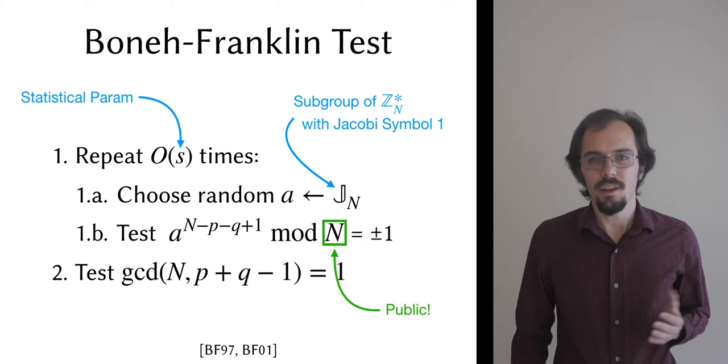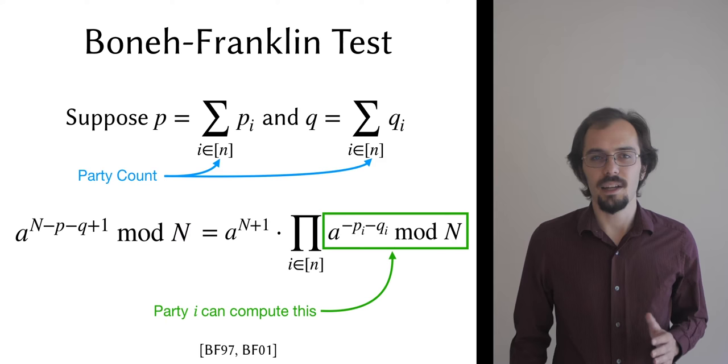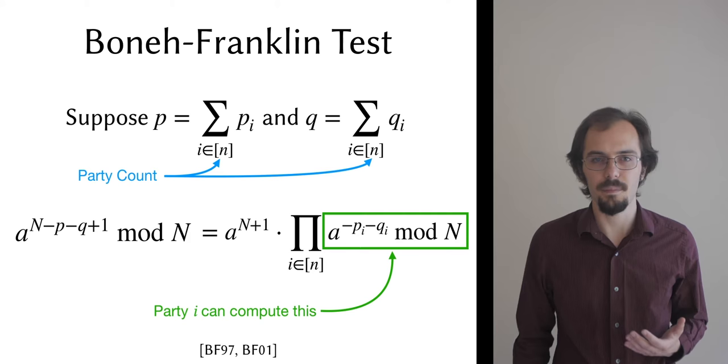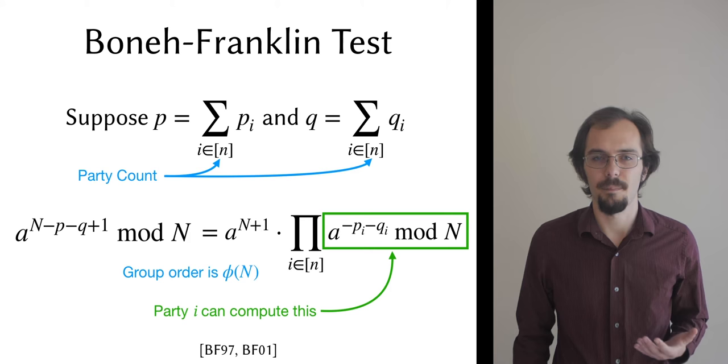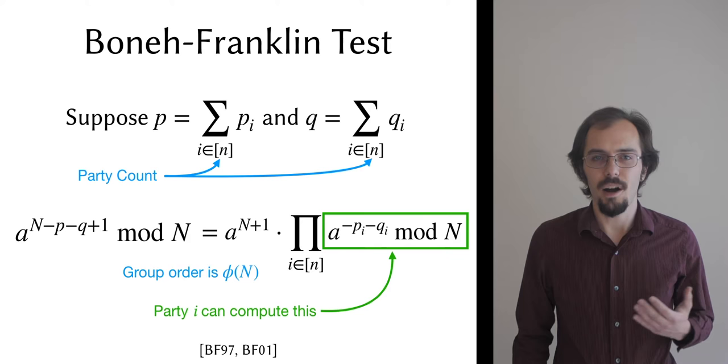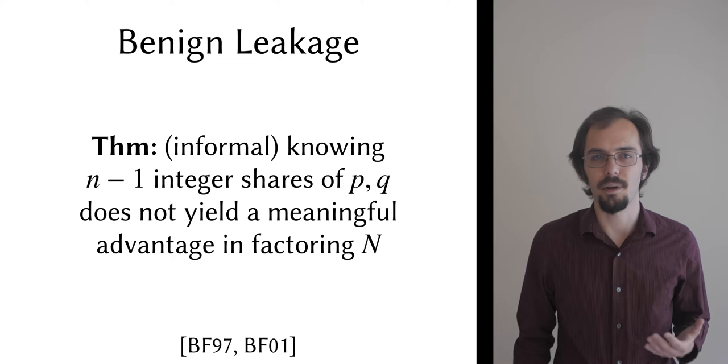This means that we can cut the factors p and q into integer shares, one share of each for every party, and then rewrite the test as the product of terms that the parties can compute locally. An integer sharing in this case is simply a set of randomly chosen positive integers that add up to the shared value. This style of sharing is important because it yields a natural method for reconstructing p and q modulo phi of n in the exponent, where phi of n is the order of the multiplicative group modulo n. If you know one or more integer shares of a value, then you know both upper and lower bounds on that value. In other words, integer shares leak some information. Boneh and Franklin provide a proof that this leakage doesn't grant an adversary a meaningful advantage in factoring the biprimes that their protocol produces.